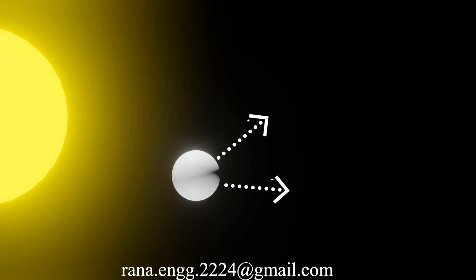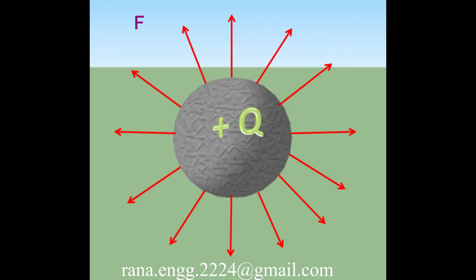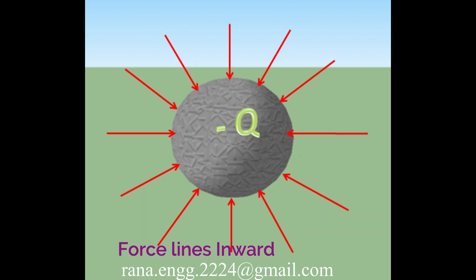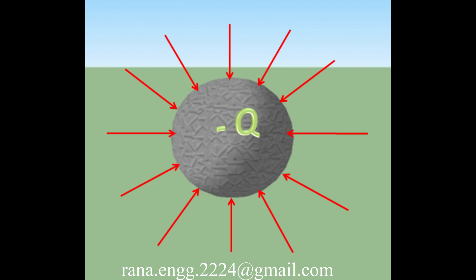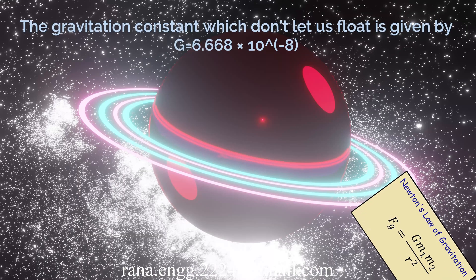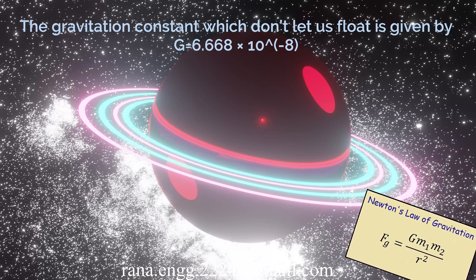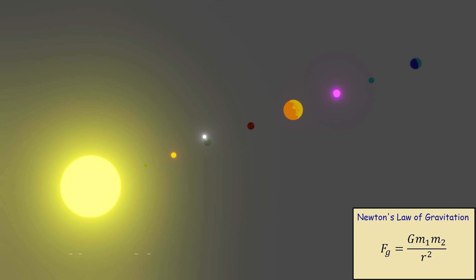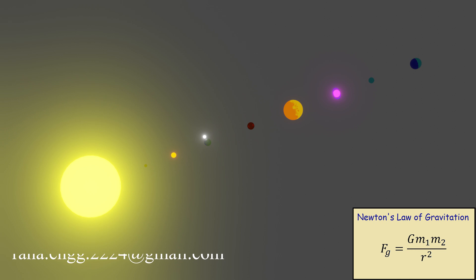If it is a negative charge, the force lines will come inward. All charges, whether positive or negative, exert some kind of force in the surrounding region on surrounding things. If there is no force, everything falls apart — like we can see in this image, there is a sun and there are planets rotating around the sun.